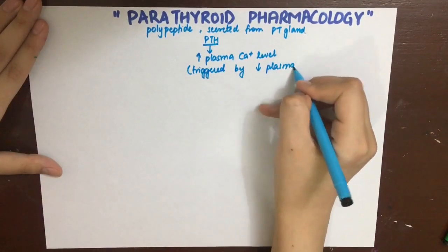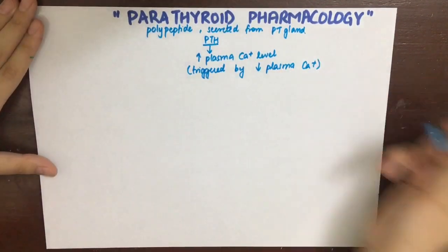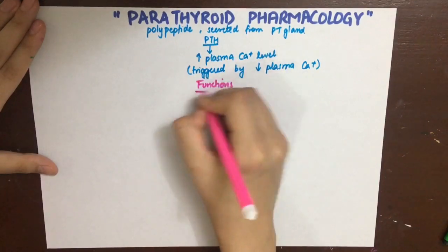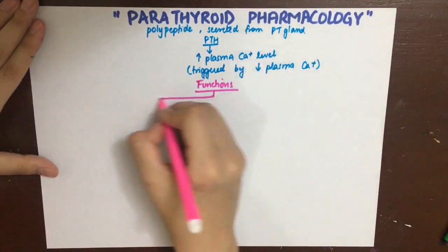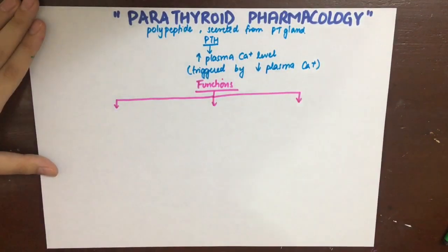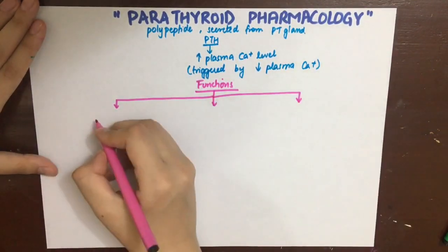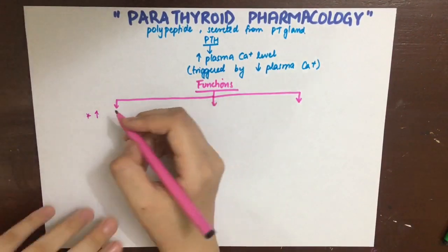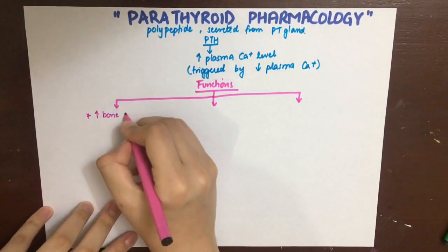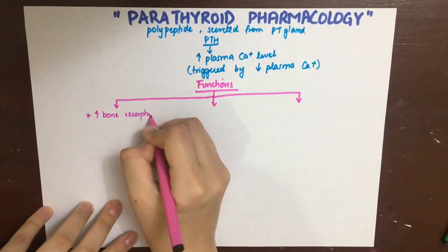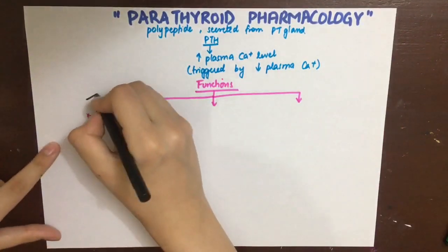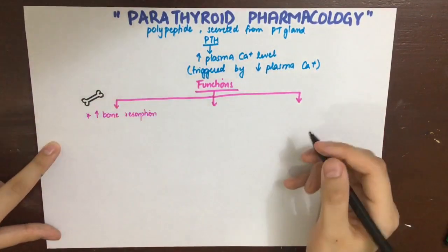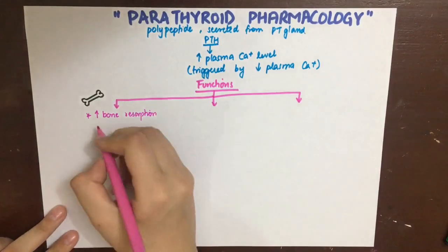Parathyroid hormone is inhibited by hypercalcemia. It has a variety of functions, chiefly on the bone, the GIT, and the kidneys. On the bones, it causes increased bone resorption.